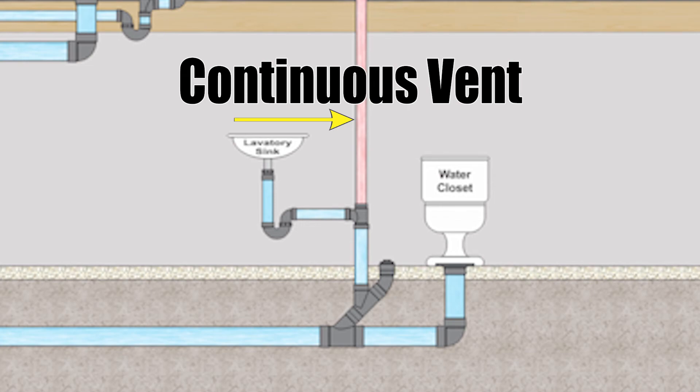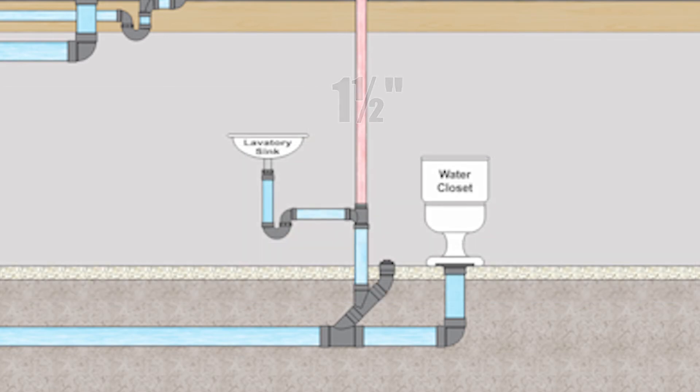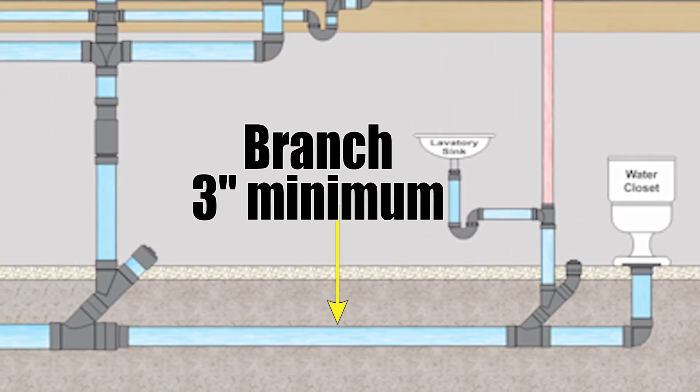But we can go and look at that vent pipe coming off the top of it. That is a continuous vent. If we use table 2.5.7.1 based on size of largest traps serve we would look at that water closet. That has a three inch trap. Therefore that continuous vent needs to be minimum one and a half inches. And when we continue downstream of this Y we have a branch and that branch will need to be three inches because we're serving a water closet which is three inches.